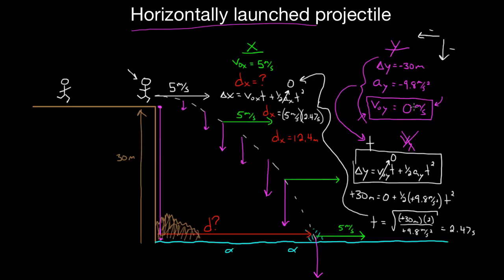So long story short, the way you do this problem and the mistakes you want to avoid: make sure you plug in your negative displacement because you fell downward. But the big one is — make sure you know that the initial vertical velocity is zero, because there was only horizontal velocity to start with. That's not going to be given explicitly in the problem. You're just going to have to provide that on your own from your knowledge of physics.